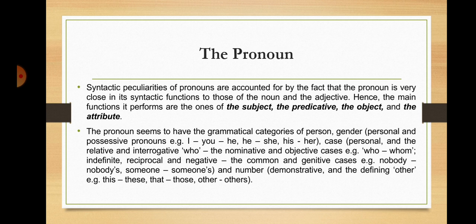The category of case is found in personal pronouns and the relative and interrogative 'who', covering the nominative and objective cases, for example 'who' or 'whom'. Indefinite, reciprocal, and negative pronouns have the common and genitive cases, for example 'nobody/nobody's', 'someone/someone's'. The category of number occurs with demonstrative pronouns and the defining pronoun 'other': 'this' (singular), 'these' (plural), 'that' (singular), 'those' (plural), or 'other' (singular), 'others' (plural).